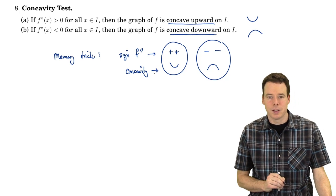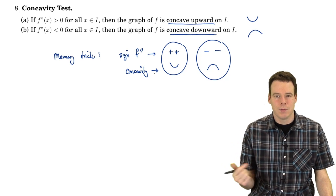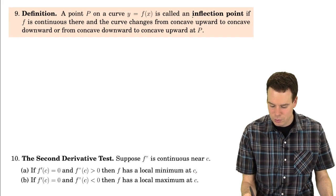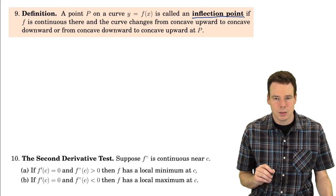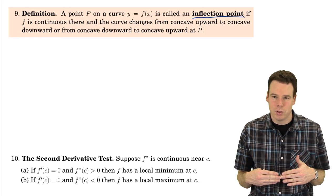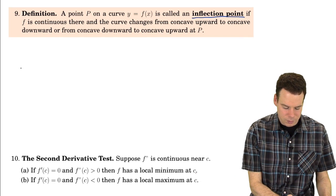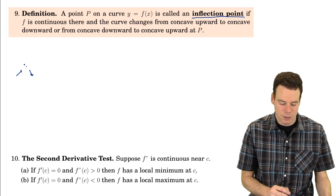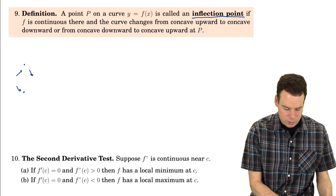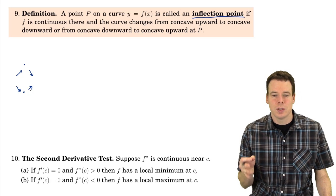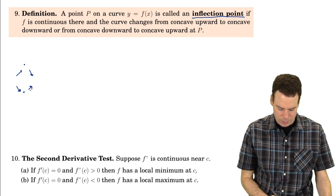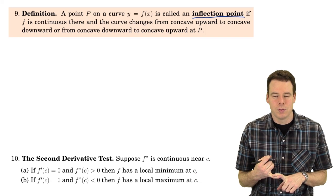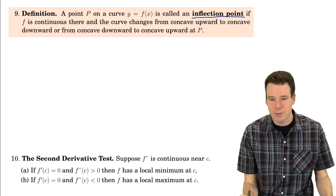Now let's introduce one more piece of terminology: inflection points. Think back to local extrema — what's happening there is the function goes from increasing to decreasing, meaning the derivative goes from positive to negative, giving a local max; or negative to positive, giving a local min. A change in the sign of the derivative indicates a local extremum. Taking this to the next level: a change in the sign of the second derivative indicates a change in concavity, and those changes in concavity are what we call inflection points.